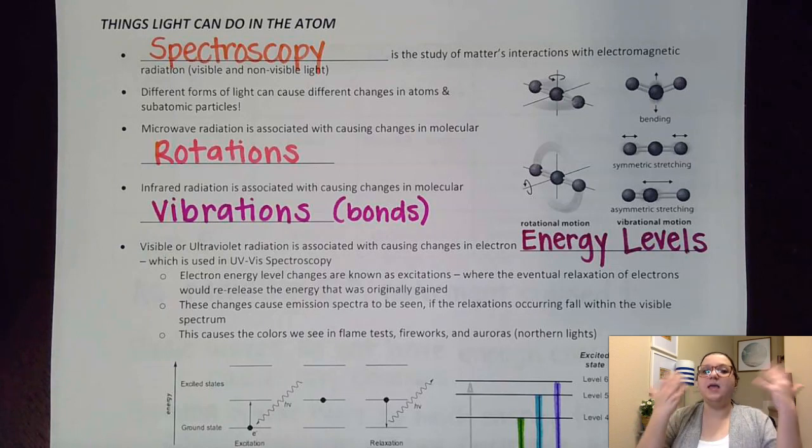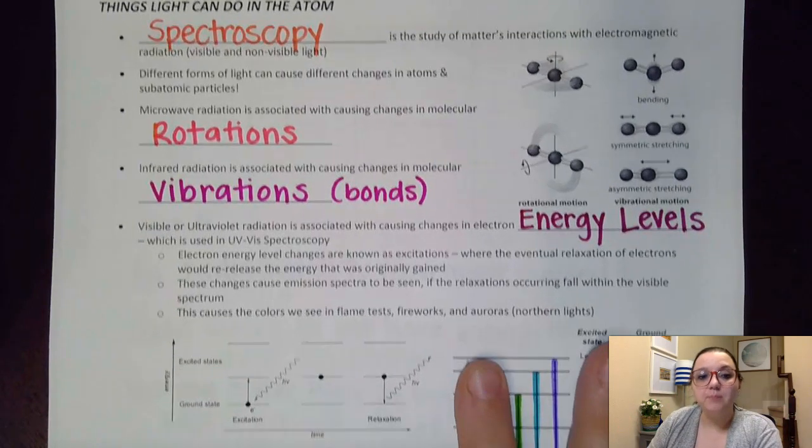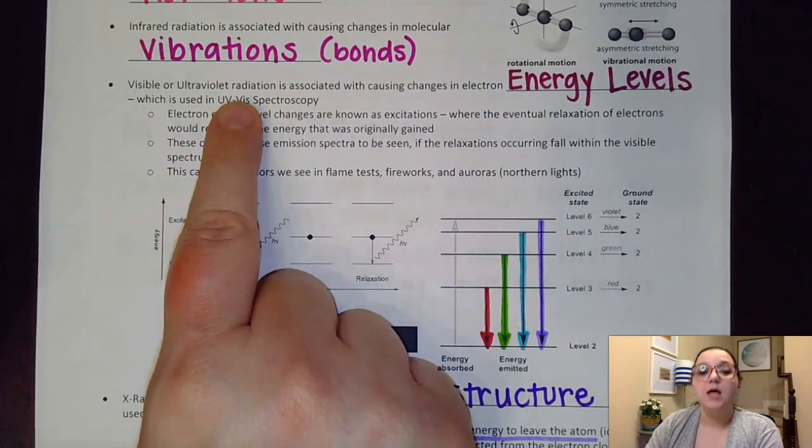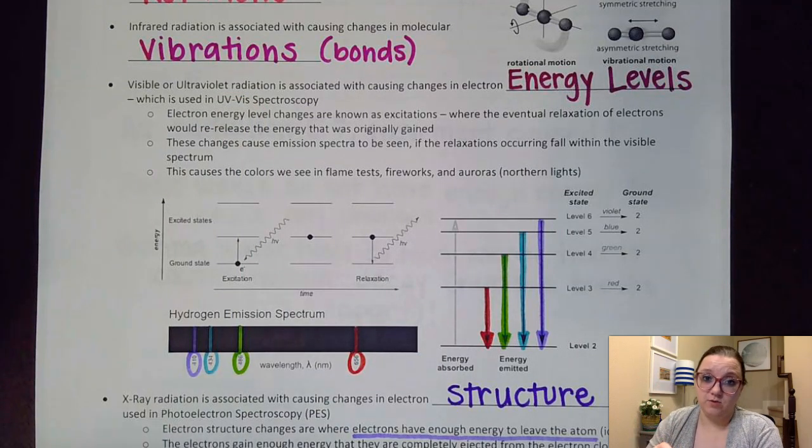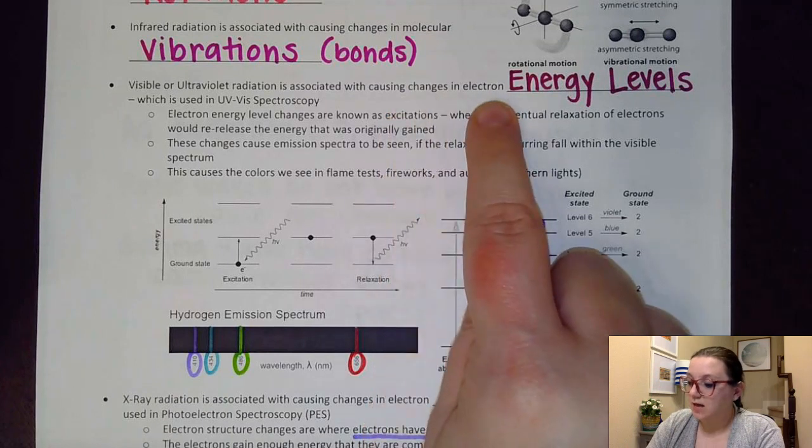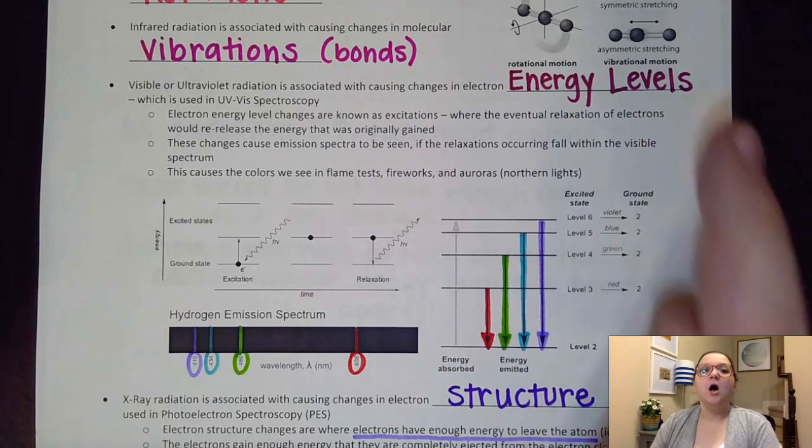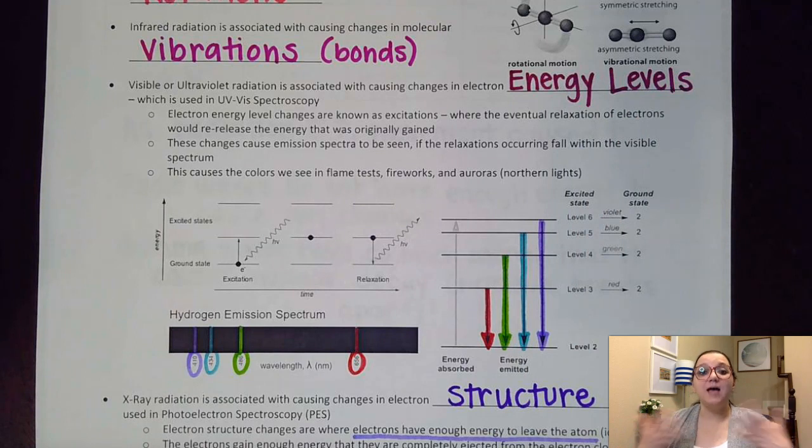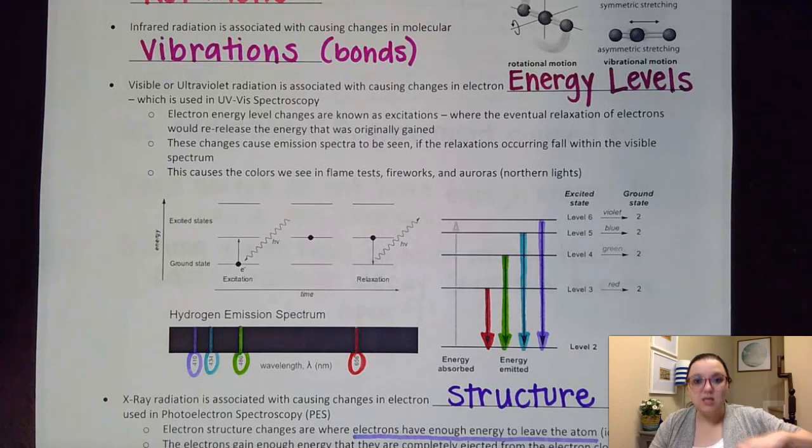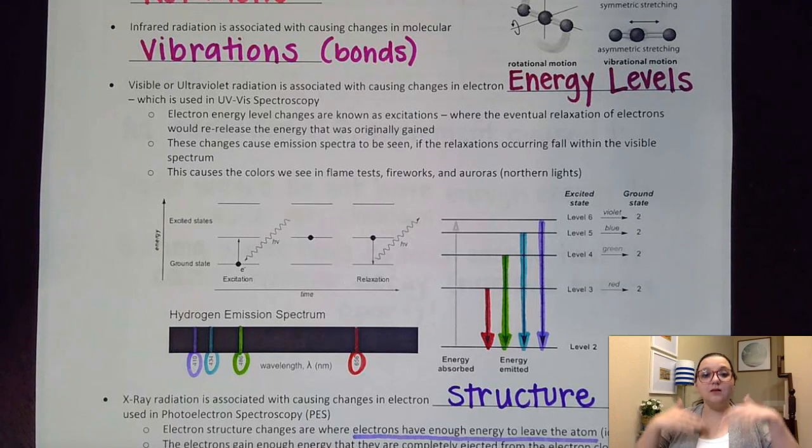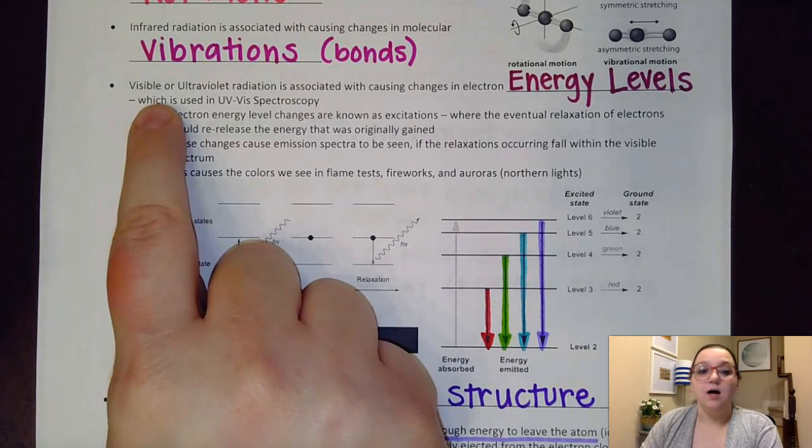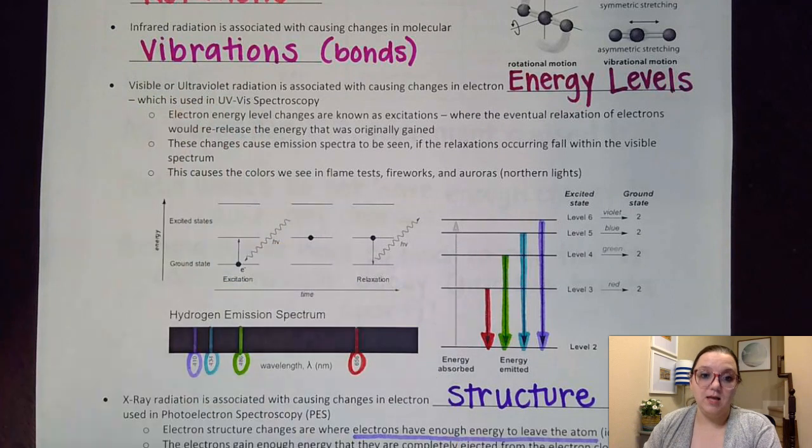So now let's up the ante on the energy even more. Let's jump up to visible or ultraviolet radiation. And when I up that energy, now I'm going to start affecting what's going on inside of those atoms. So this causes changes in electron energy levels. Hopefully we remember back from pre-AP the terms excitation and relaxation. Excitation is when those electrons gain energy and jump up energy levels. And they can't stay excited forever, so eventually they fall back down and release light.